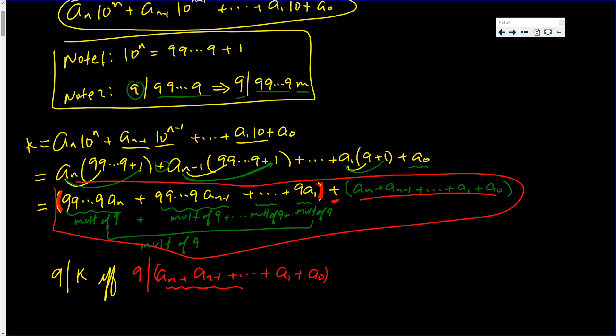Which just happened to be the sum of the digits. 9 divides an integer if and only if 9 divides the sum of the digits. If 9 divides the sum of the digits of a number, then 9 divides that number.